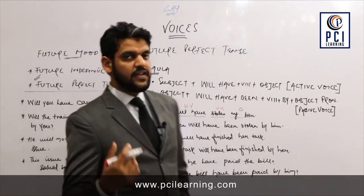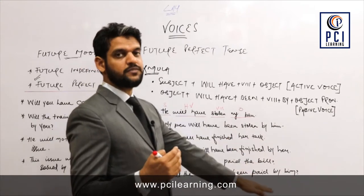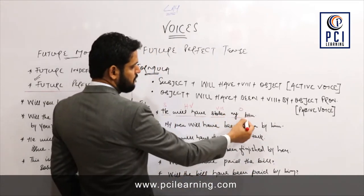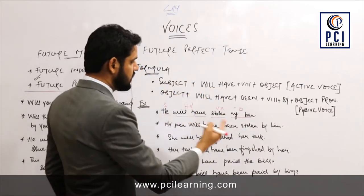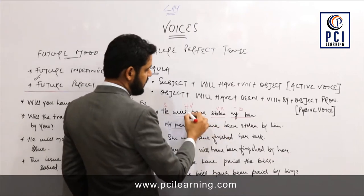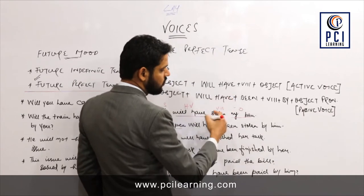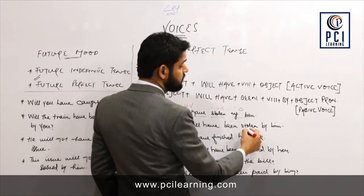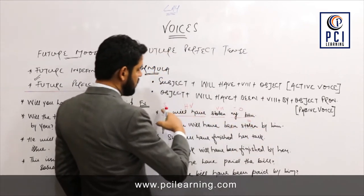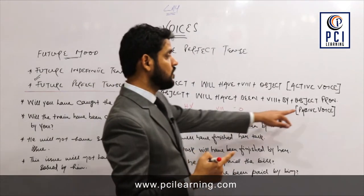The rule is that the object comes to the place of subject and the subject goes to the place of object. So 'my pen' is the object and will come at the place of subject: 'My pen will have been...' — just like in active voice. Then you add 'been', use the third form of the verb, and then 'by' followed by the subject pronoun as an object pronoun.